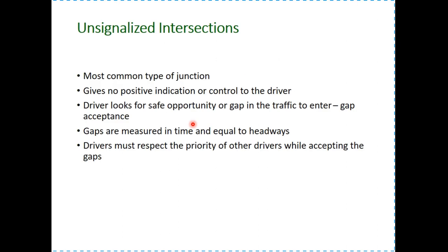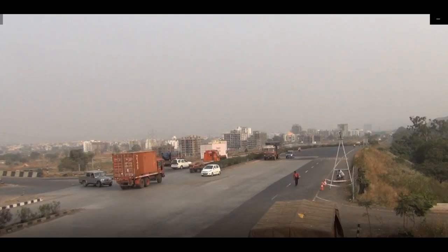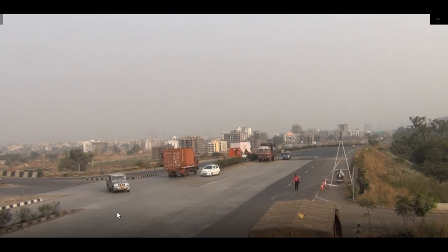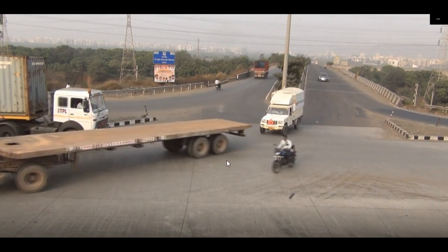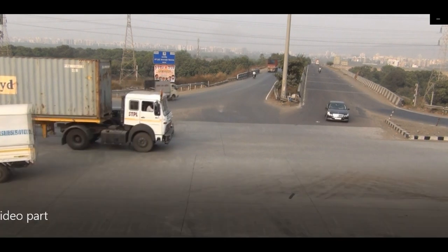Unsignalized intersections are the most common type of junction on any network. The important point here is that these junctions do not give any positive signal or control to the driver — he or she is not told when to leave the intersection. The driver alone must decide when it is safe to enter. Drivers always look for a safe opportunity or gap in the traffic to enter. You can see in this video how the gap is being used at an unsignalized intersection. A vehicle will wait for a gap in the opposing stream to take a right turn. This is called the traffic gap acceptance theory.